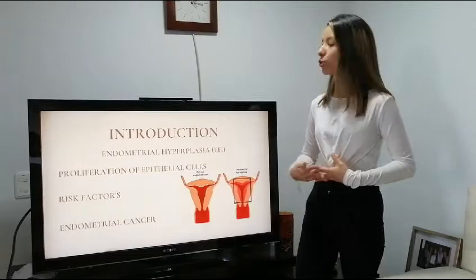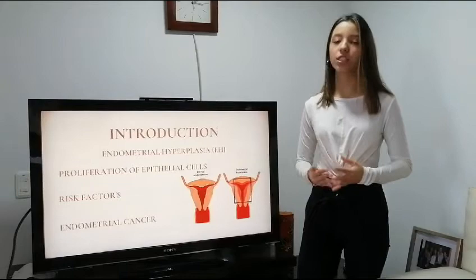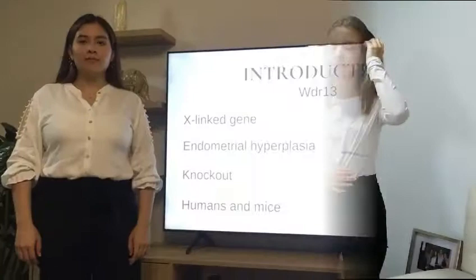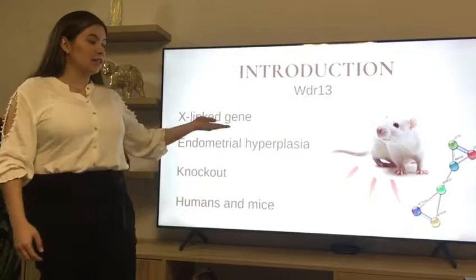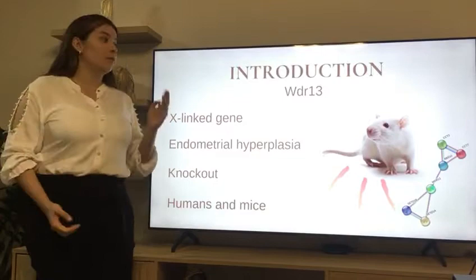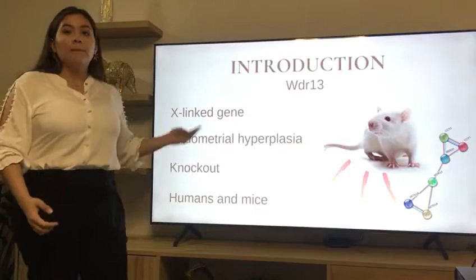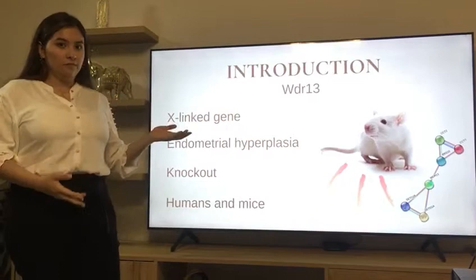Now, we have endometrial cancer, which is the consequence of the evolution of endometrial hyperplasia. It's one of the most common reproductive cancers and accounts for about 90% of uterine cancers. WDR13 is an X-linked gene expressed in several tissues including uterine tissue, protecting from endometrial hyperplasia. In the study, the gene knockout produced endometrial hyperplasia, showing the protective function of the gene.